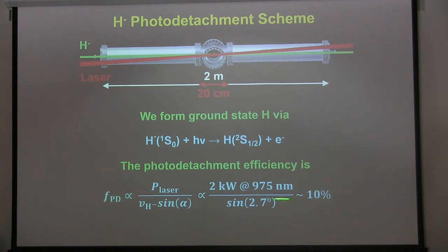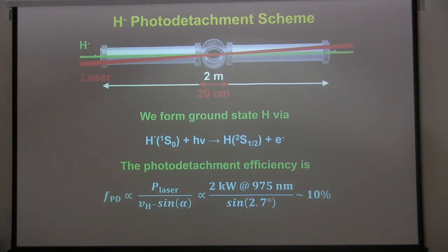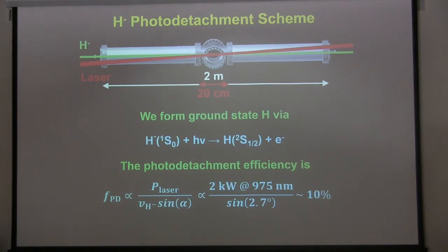The photo detachment region is about 2 meters long. The laser crosses the H-minus beam at an angle of about 2.7 degrees and they overlap for about 20 centimeters. We form ground state hydrogen through photo detachment — H-minus only has one bound state, a singlet S0, and we photo detach into the hydrogen doublet S one-half. The photo detachment efficiency is given by the laser power divided by the velocity of the H-minus and the sine of the angle between the two beams. That's why we use such a shallow angle — sine is in the denominator, so a smaller angle means higher efficiency.